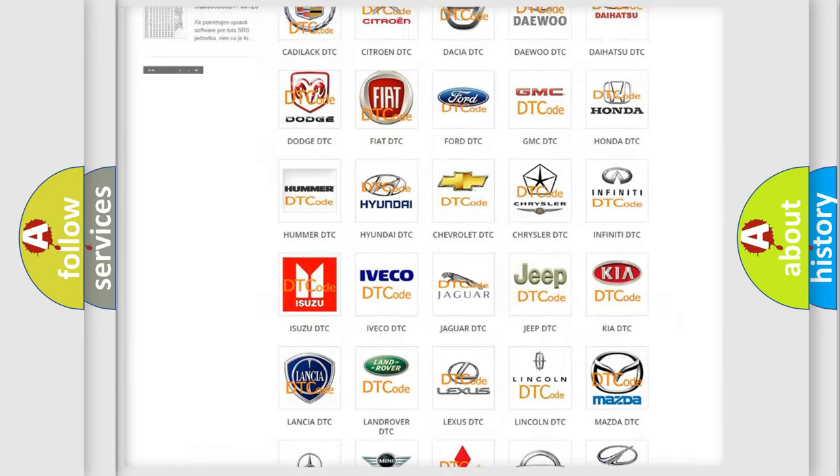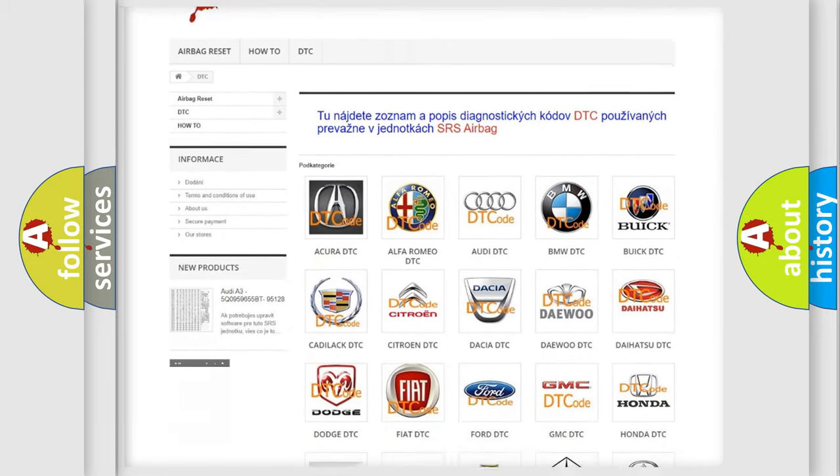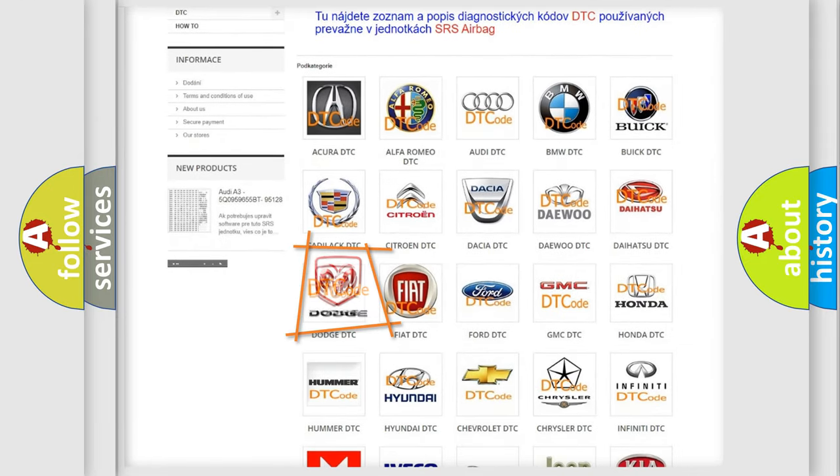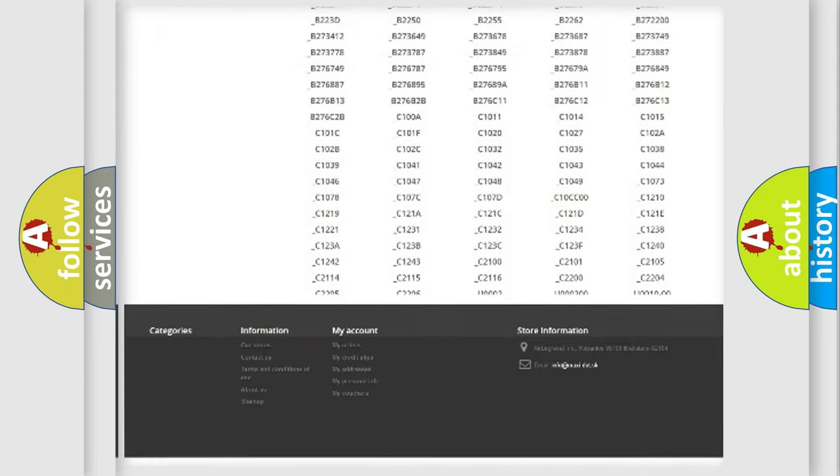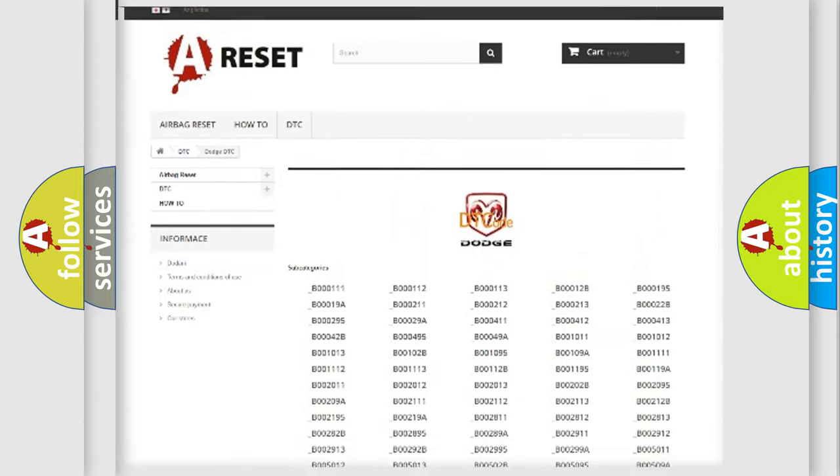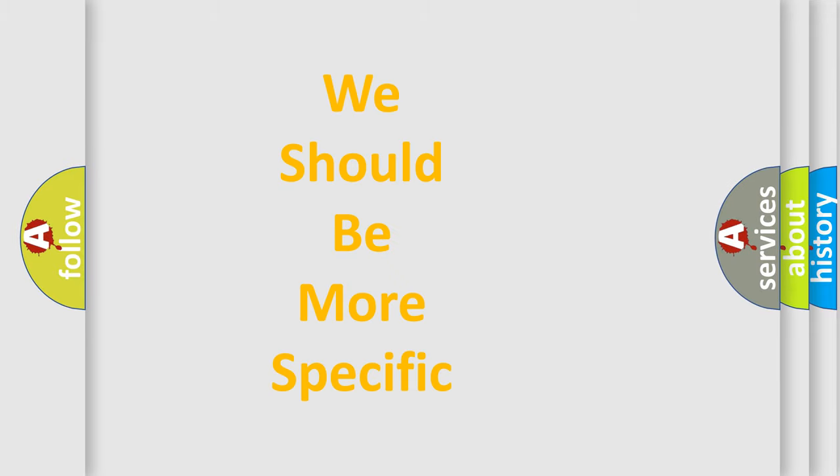Our website airbagreset.sk produces useful videos for you. You do not have to go through the OBD2 protocol anymore to know how to troubleshoot any car breakdown. You will find all the diagnostic codes that can be diagnosed in Dodge vehicles, and many other useful things. The following demonstration will help you look into the world of software for car control units.